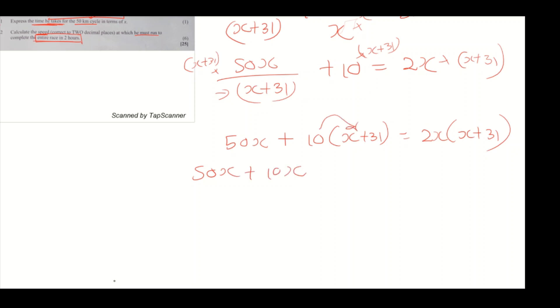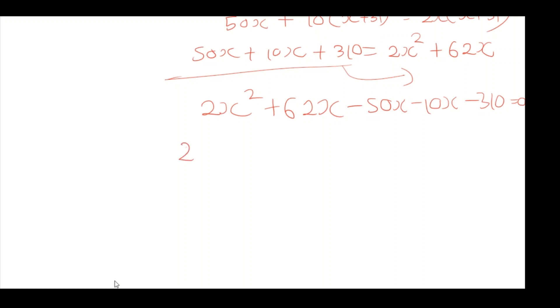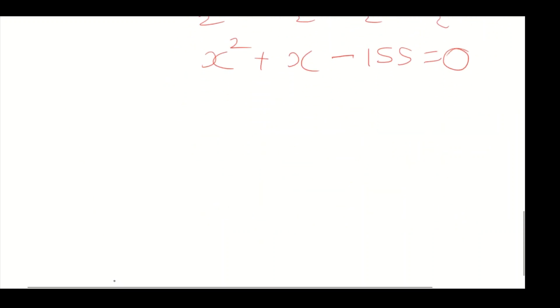Expand to get 50x plus 10x plus 310 equals 2x squared plus 62x. Bring everything to the other side: 2x squared plus 62x minus 50x minus 10x minus 310 equals zero. Add like terms to get 2x squared plus 2x minus 310 equals zero. Divide by 2 to get x squared plus x minus 155 equals zero.